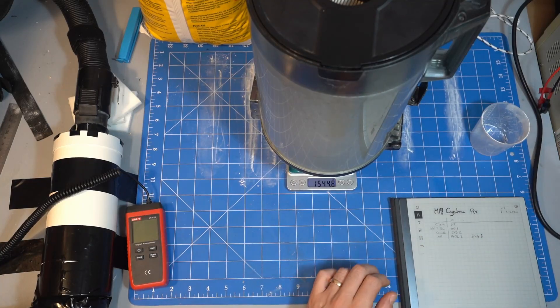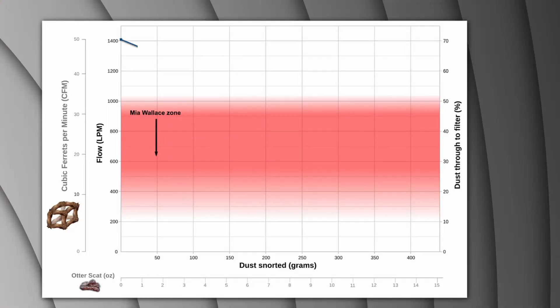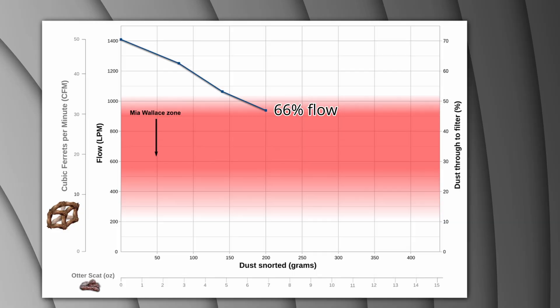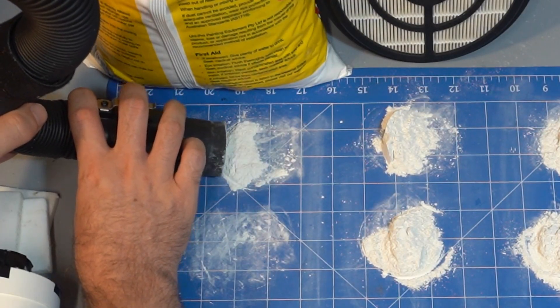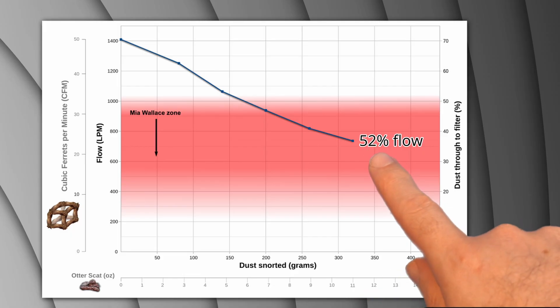At regular intervals I weighed the canister and filter to see what percentage of dust was making it to the filter. We can see that after just 200 grams we've dropped 66% of the original flow and it struggles to pick up dust. By 320 grams we're at 52% of the original flow and I ended the test.